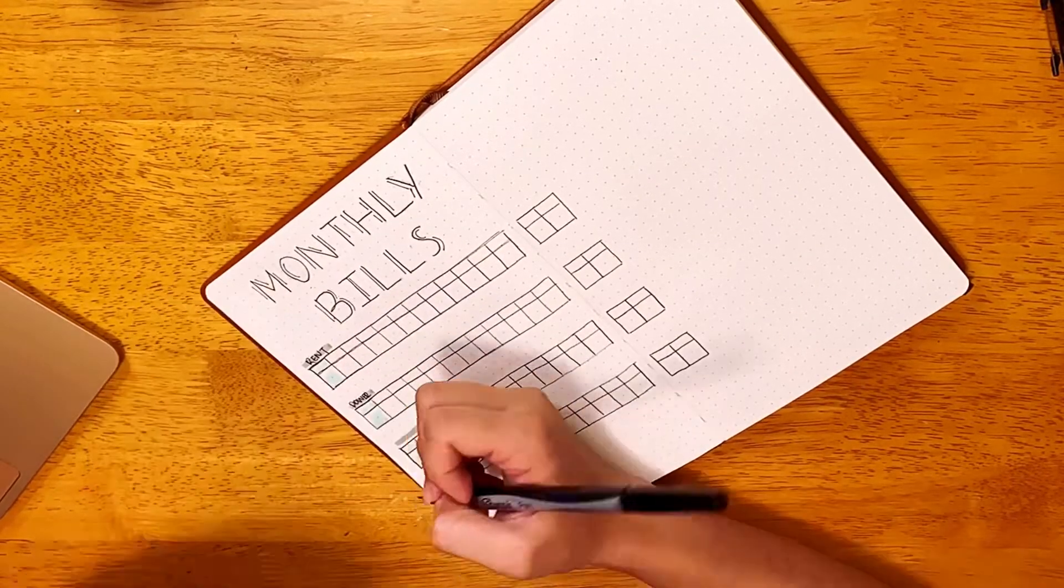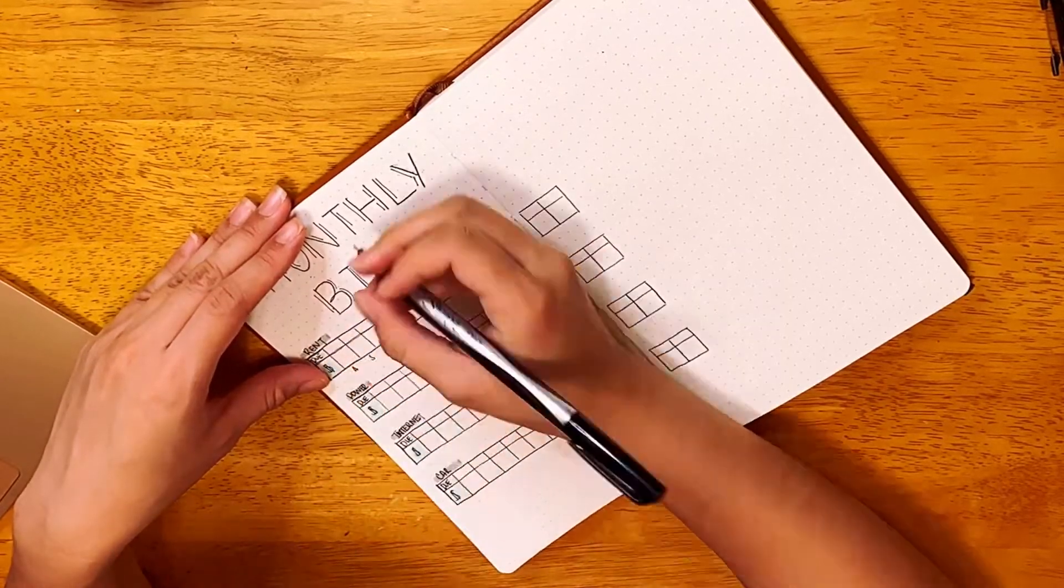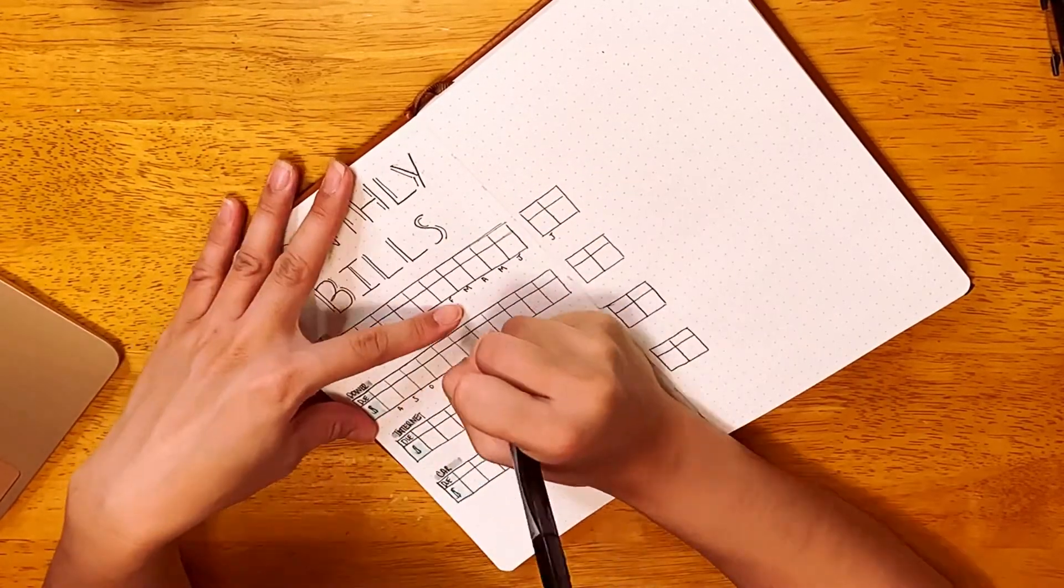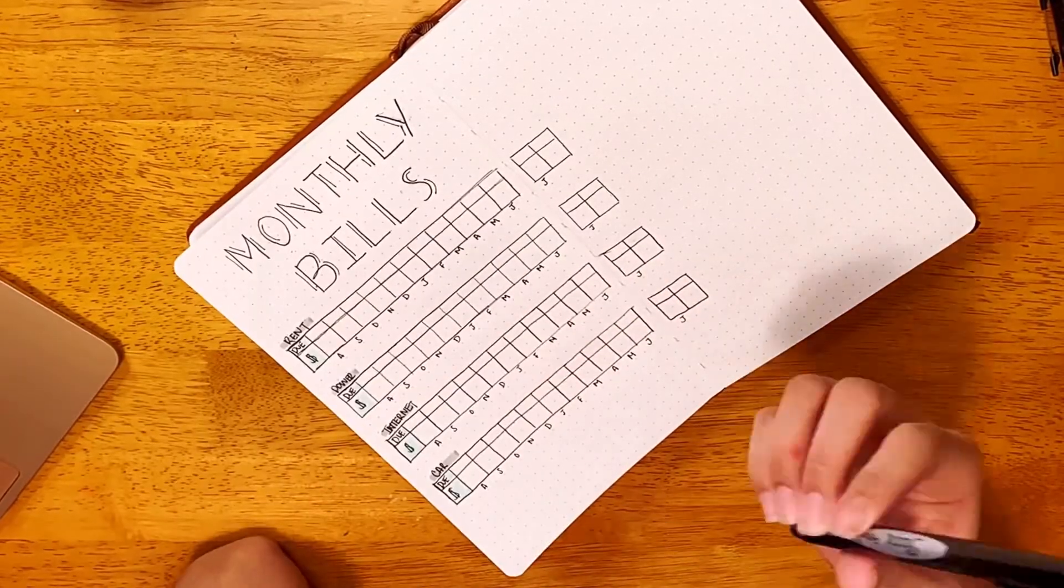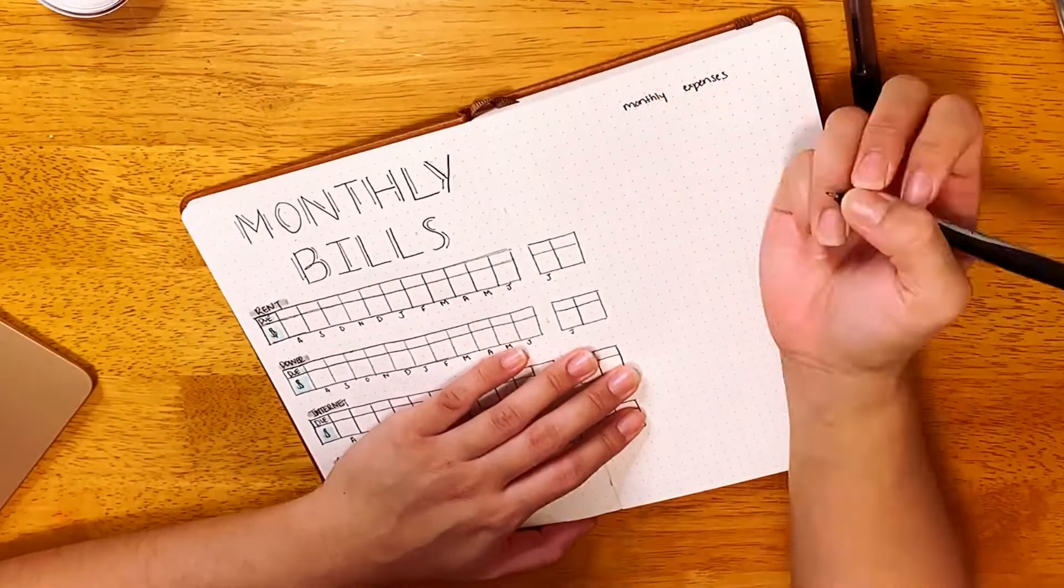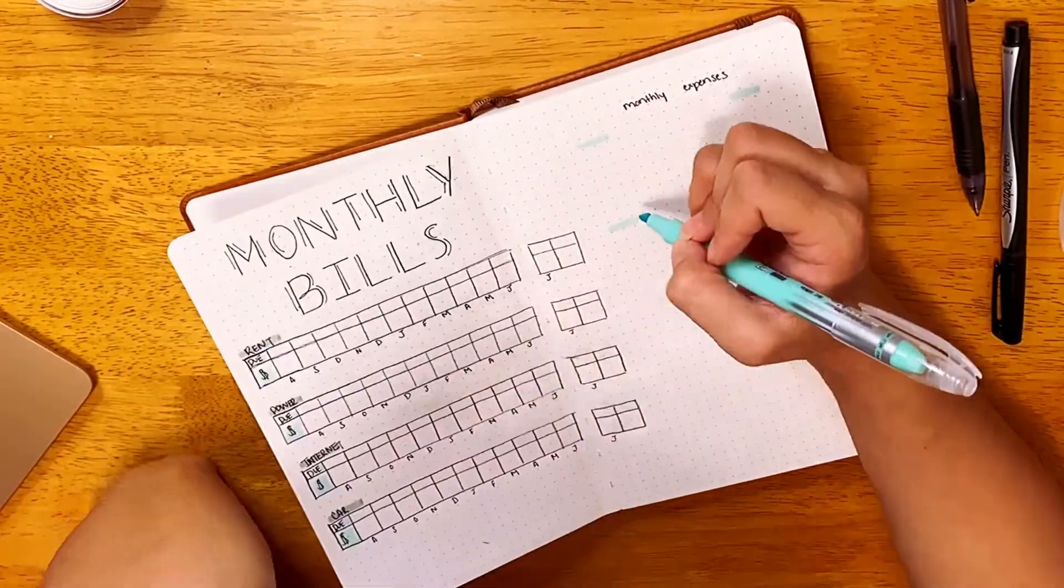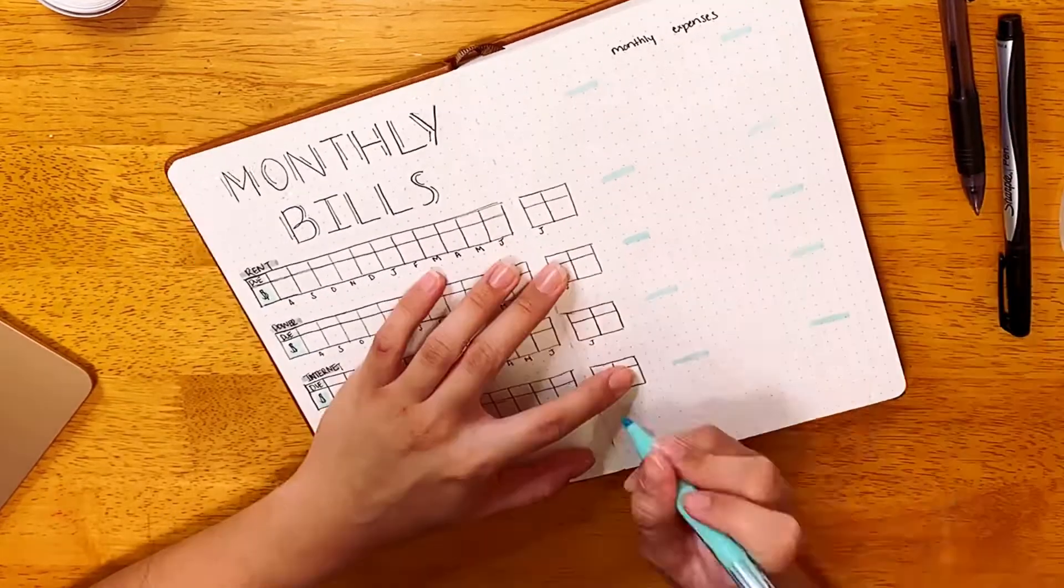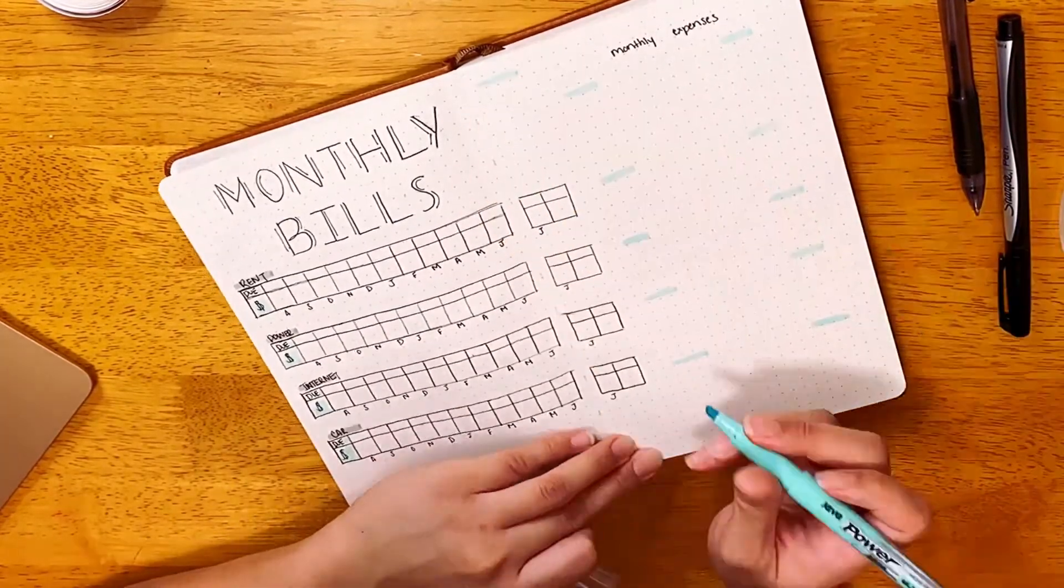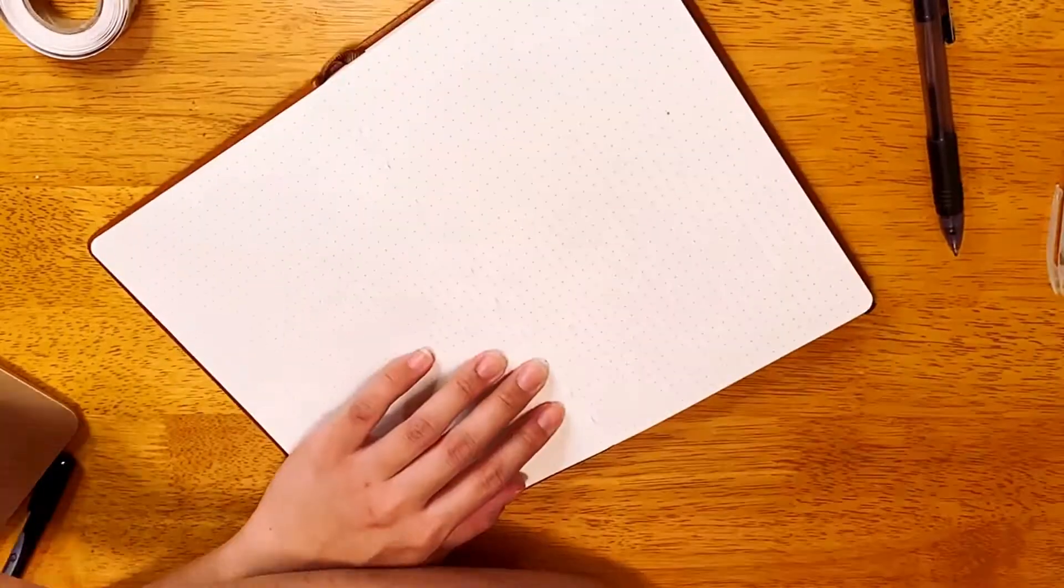I am just labeling all of the bills that are consistent every month and then putting the months at the bottom. Then I left so much empty space on the right. I literally had no idea what to do. So I just put like a monthly expenses and then just listed all the months. Honestly, I'm going to be truthful. I don't even think I'm going to use this, but I don't know. It just bothered me that there was just so much empty space.